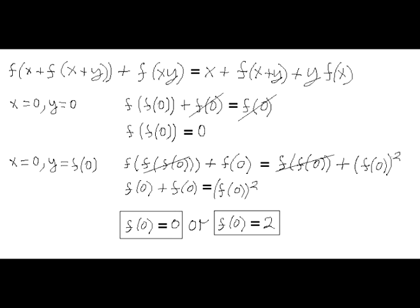Then, let's plug 0 for x and f of 0 for y. We'll get the equation 2 times f of 0 equals f of 0 squared. And from this, it follows that the only two possible values of function f at point 0 are either 0 or 2.